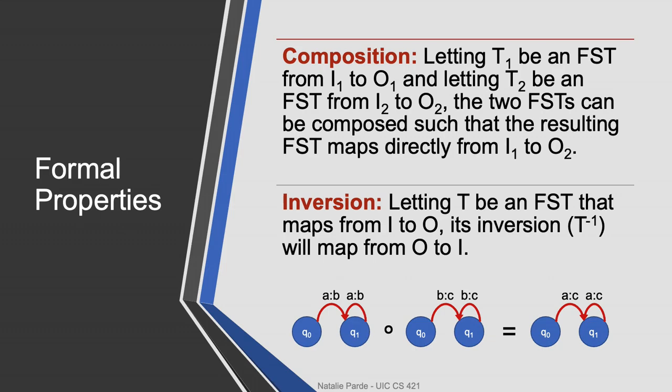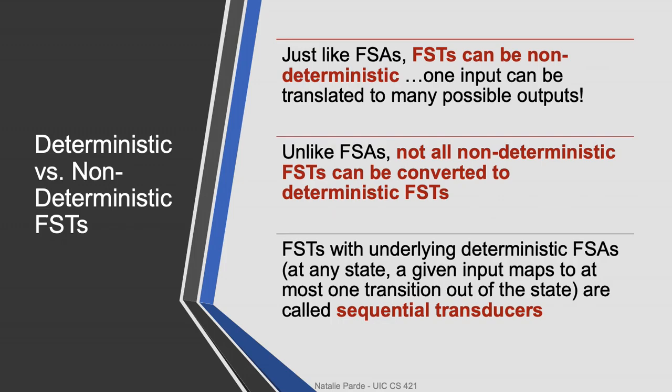FSTs are compositional just like FSAs, so you can join two FSTs together such that the input going into FST number one can be directly mapped to the output going out of FST number two. They can also be inverted so that the output is mapped to the input instead.